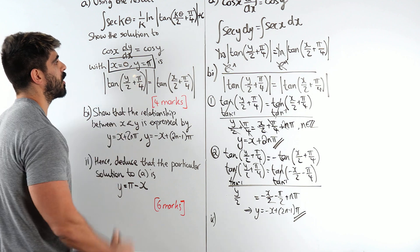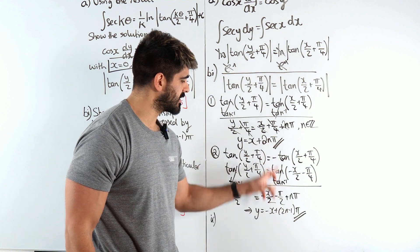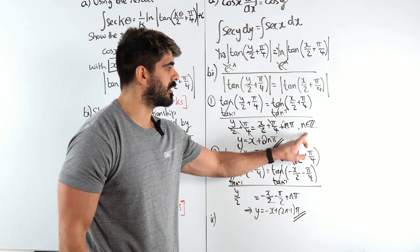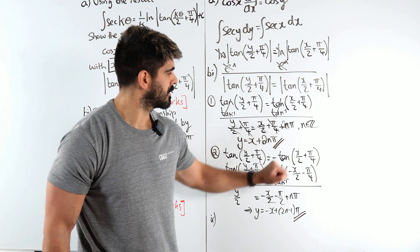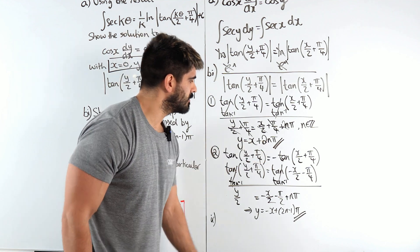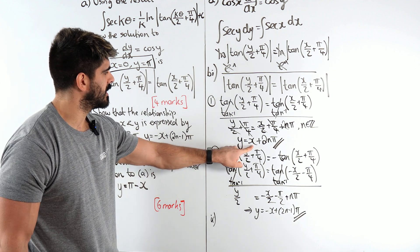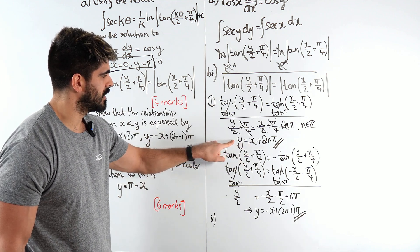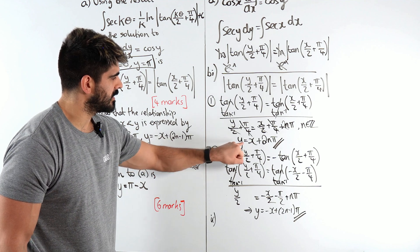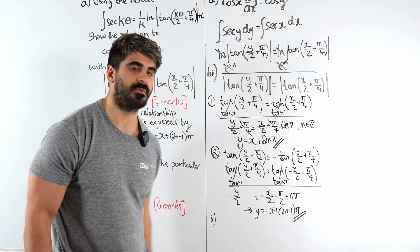x is zero, y is pi. It's going to have to satisfy one of these equations. Remember, n is an integer. Is it possible for it to equal this first equation? Well, if you substitute x is zero and y is pi, you're going to get pi equals 2n pi. n would have to be 1 half. Well, that's not possible because that's not an integer.